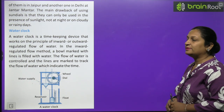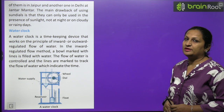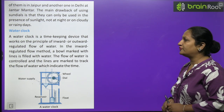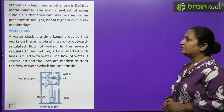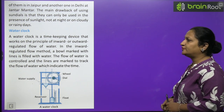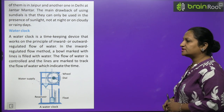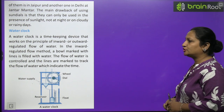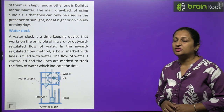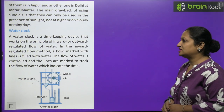The main drawback of using a sundial is that it can only be used in the presence of sunlight — it won't work at night because no shadow forms, and also won't work on a cloudy or rainy day. Now, the water clock: a water clock is a timekeeping device that works on the principle of inward or outward regulated flow of water. In the inward regulated flow method, a bowl marked with lines is filled with water, and the flow of water is controlled — the lines trace the flow of water to indicate time.